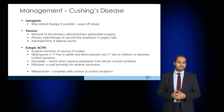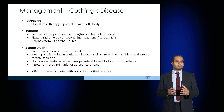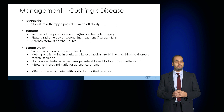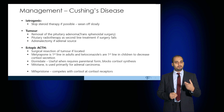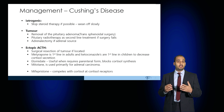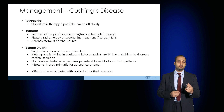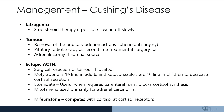In order to manage Cushing's, first of all determine the cause. If this is iatrogenic, try to stop the steroid therapy by weaning patients off slowly. If the patient has Cushing's as a result of a tumour, they may require surgical removal. If this is a pituitary adenoma, they may require transsphenoidal surgery or radiotherapy. If the adrenals are the source, the patient would undergo an adrenalectomy.